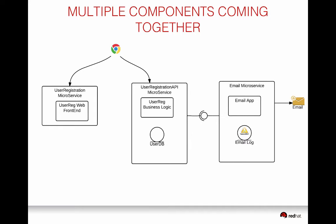So how do these all come together? The user goes to the browser and accesses the frontend microservice, which has PHP running and produces the HTML pages displayed in the browser. The user fills in details and clicks register. At that point, the browser makes AJAX calls to the user registration API microservice — the backend. This backend registers the user, saves details to the user database, and can return the list of users. When a user is registered, it also sends out an email by calling the email microservice, which is completely independent. The email log part is yet to be built — a simple example where three microservices come together.